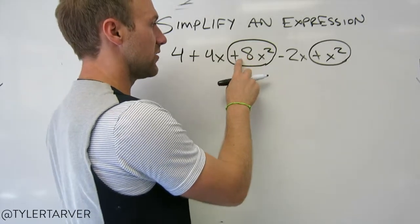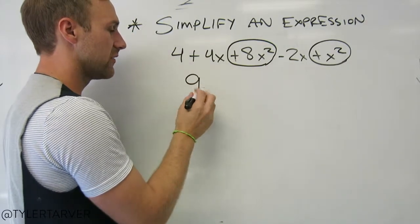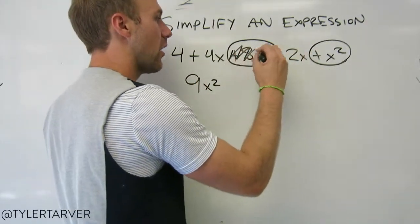You've got positive 8, plus we know that's always 1, so it'll be 9—that's our coefficients added together. Then x² stays in there. Now mark it out, it's your paper, do what you want.